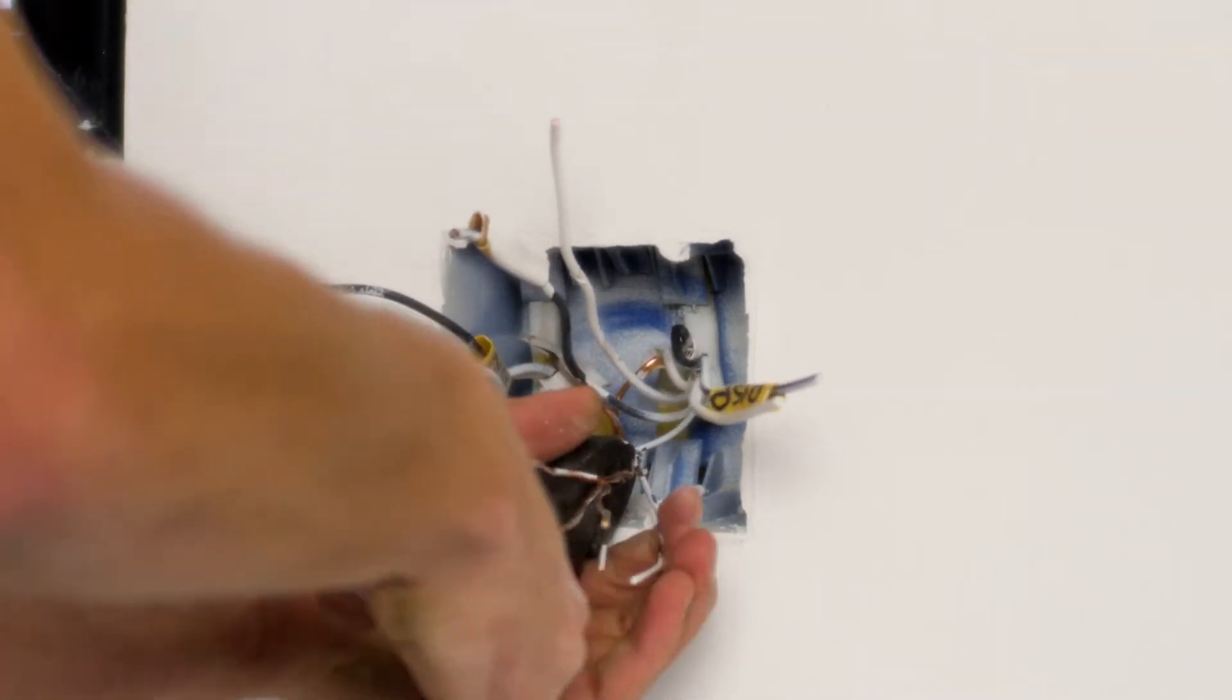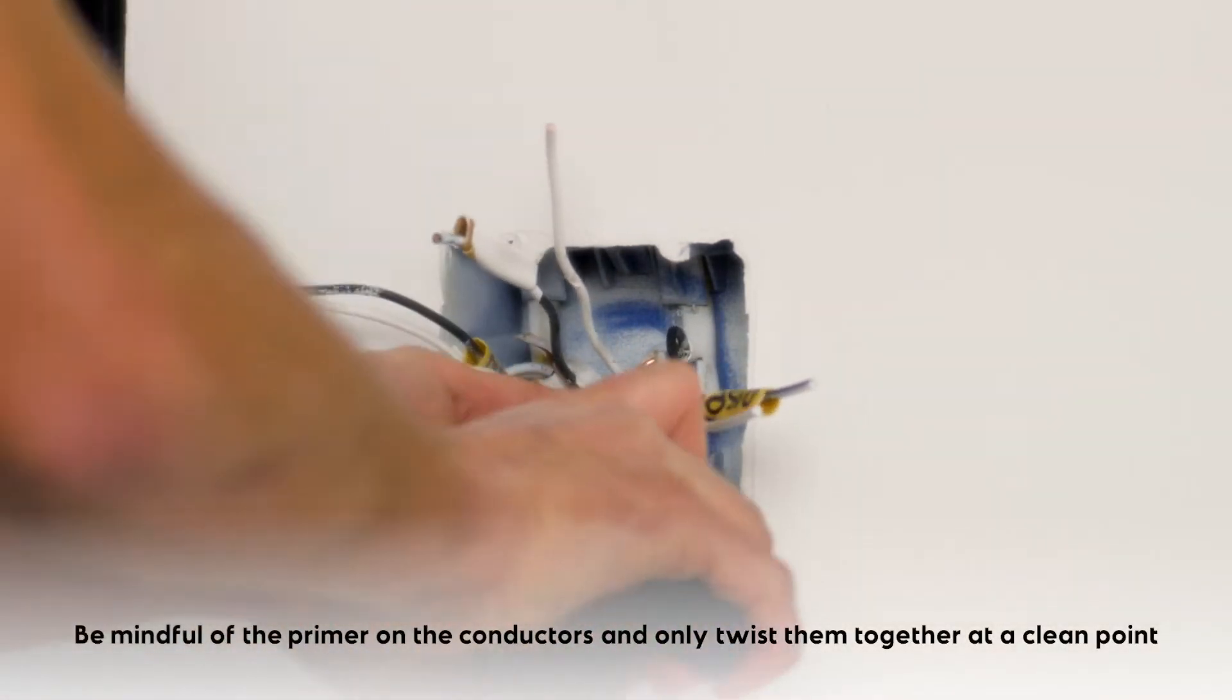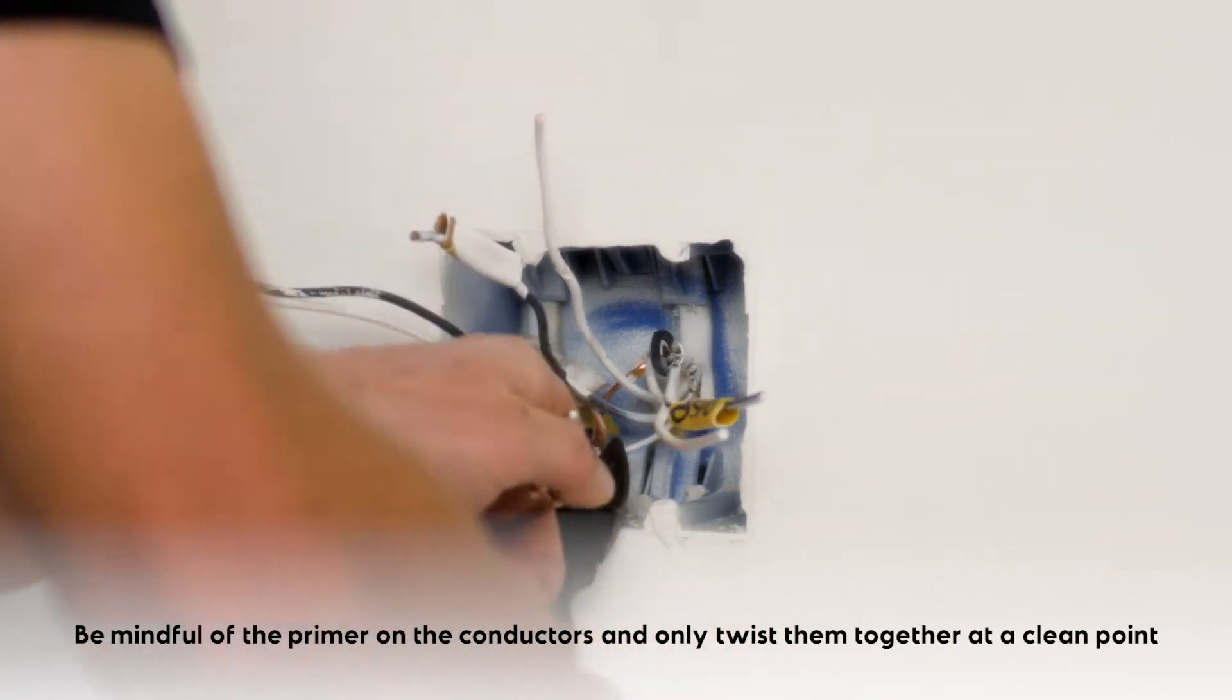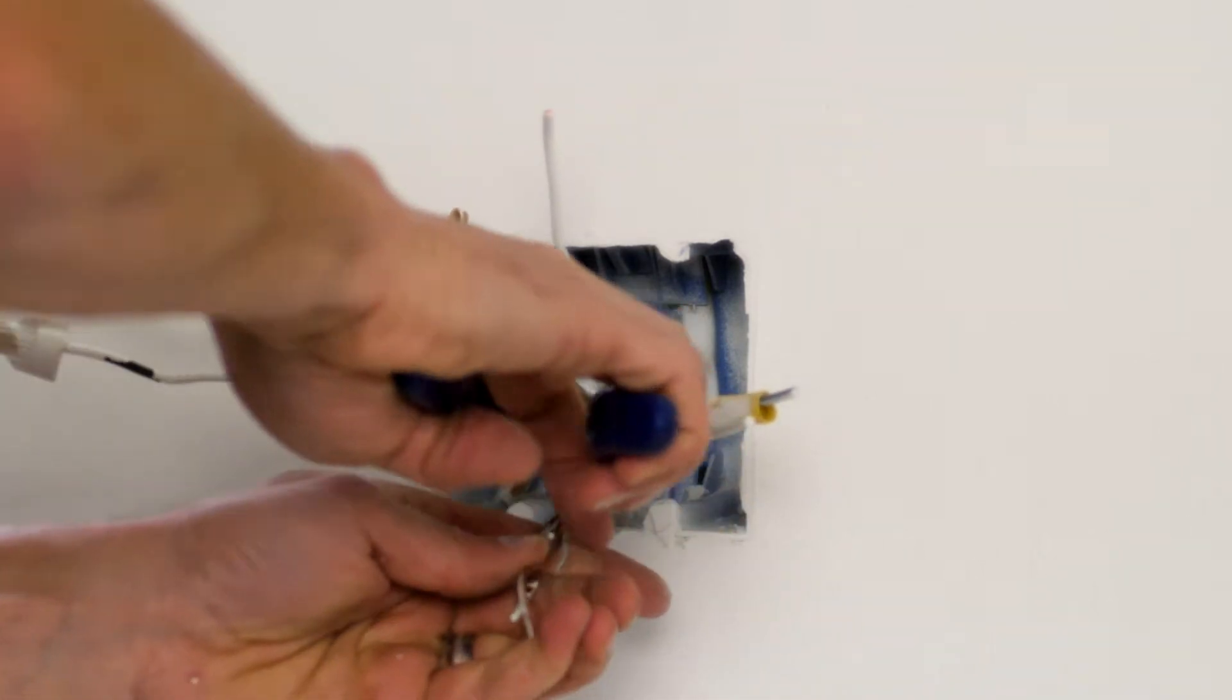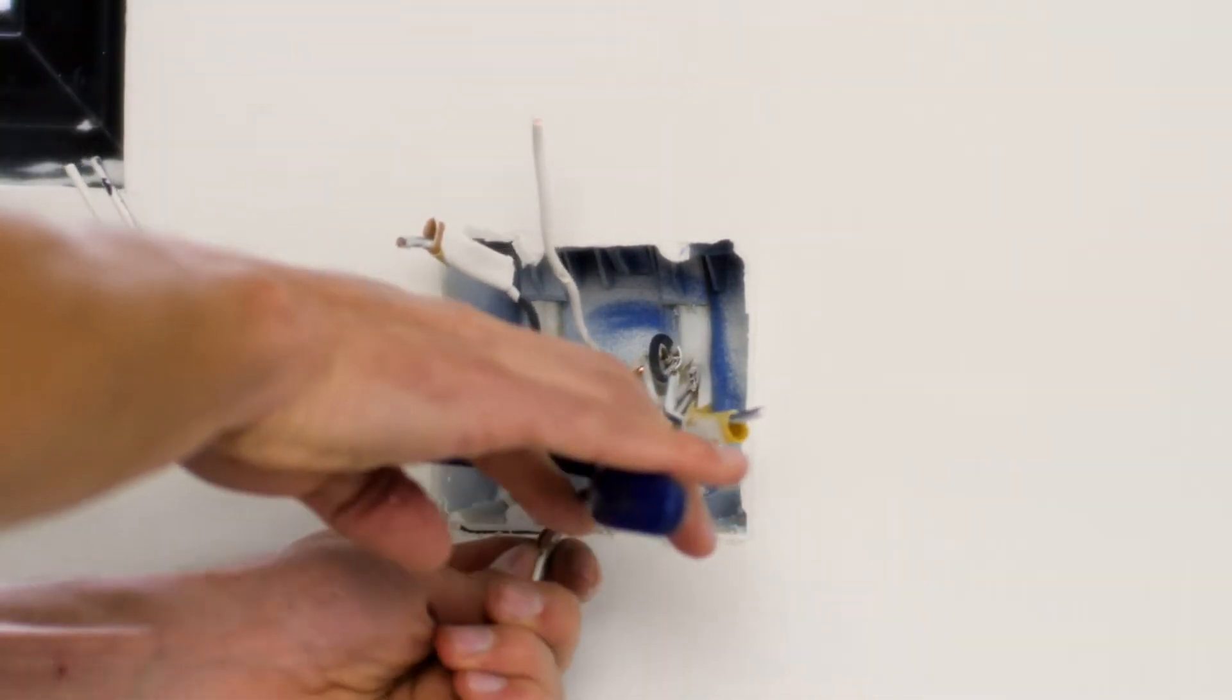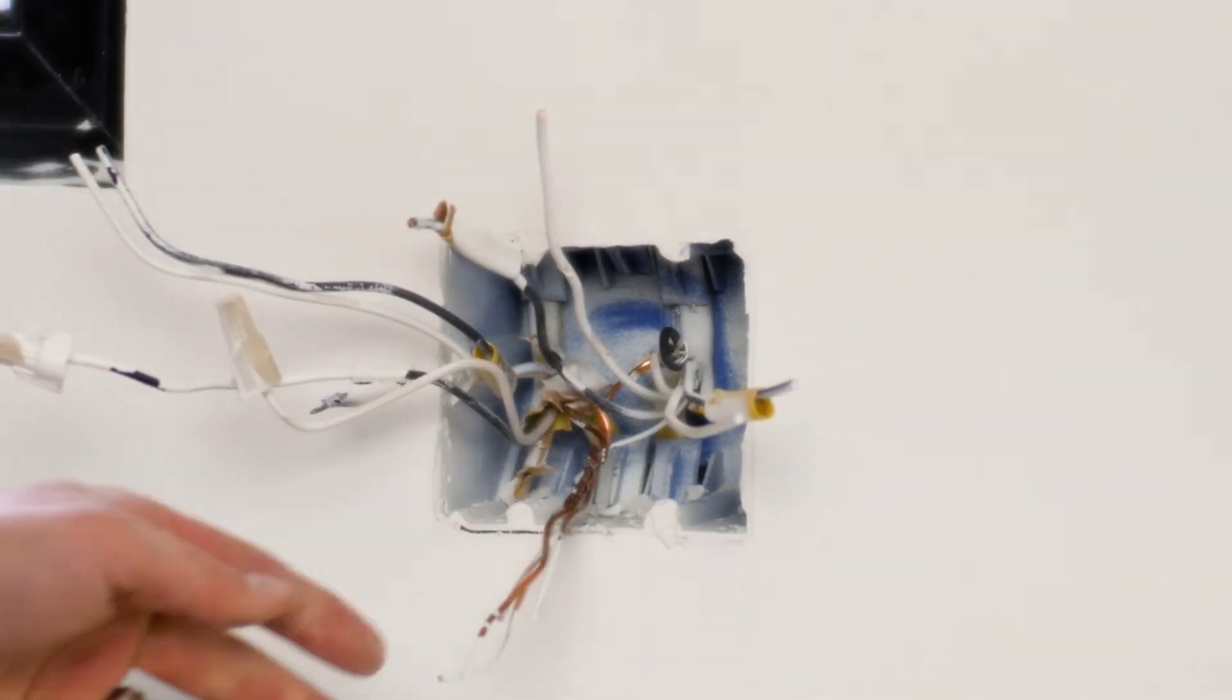I'll lay them together and I'm gonna give them a pre-twist because I really want a good grouping. And I'm mindful of the primer that's on these conductors and I'm twisting them at a point that's pretty clean. Any of that primer that's left, I'm taking it off with my fingernail. Now I've got a good pre-twist there.